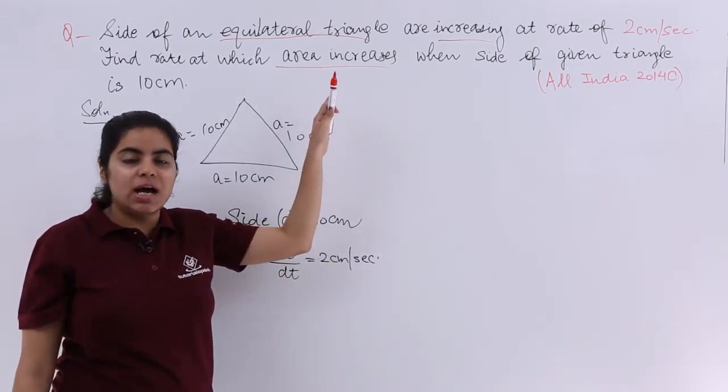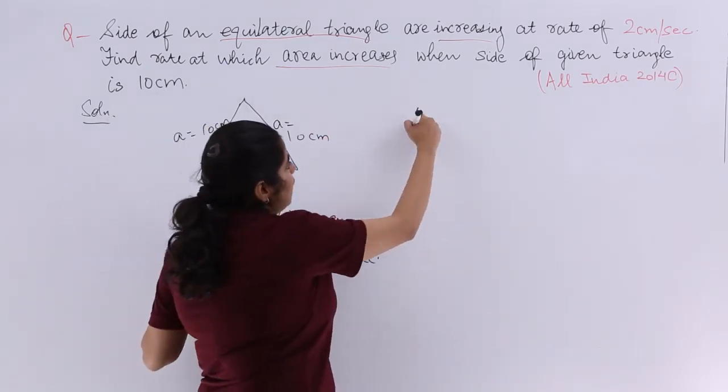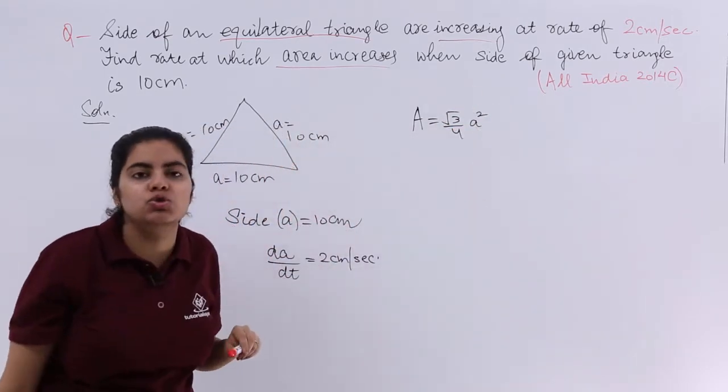Now it is asking us to find the rate of change of area. So area of the equilateral triangle, root 3 by 4 a square is the formula. First thing you should know.